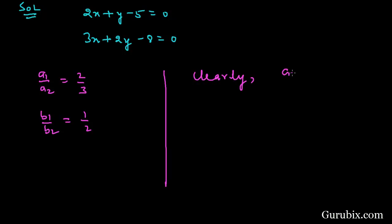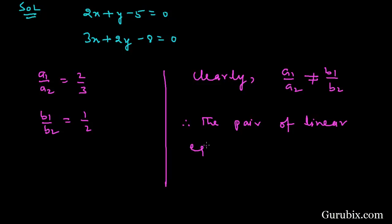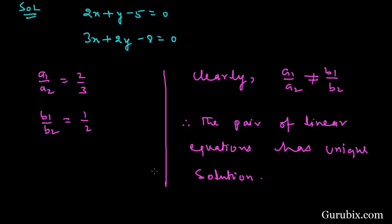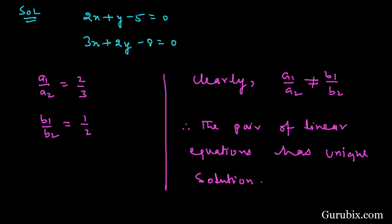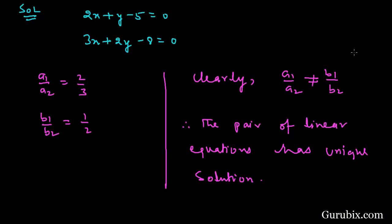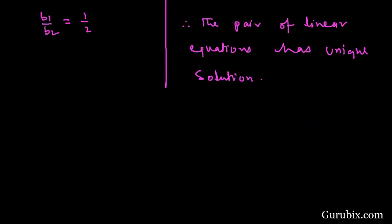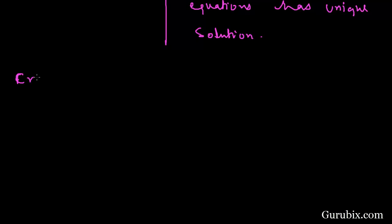Clearly, A1 over A2 is not equal to B1 over B2. Therefore, the pair of linear equations has a unique solution. This means the graph of these lines will intersect at one point, and now we shall apply the cross multiplication method to find the solution.